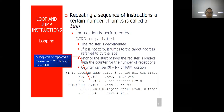First is the looping concept. In any controller or processor, this looping concept is used everywhere because here you are repeating the sequence of instructions a number of times to save the extra memory space. Repeating a sequence of instructions a certain number of times is called a loop. Now loop action is performed in many ways. DJNZ stands for decrement and jump if not zero.